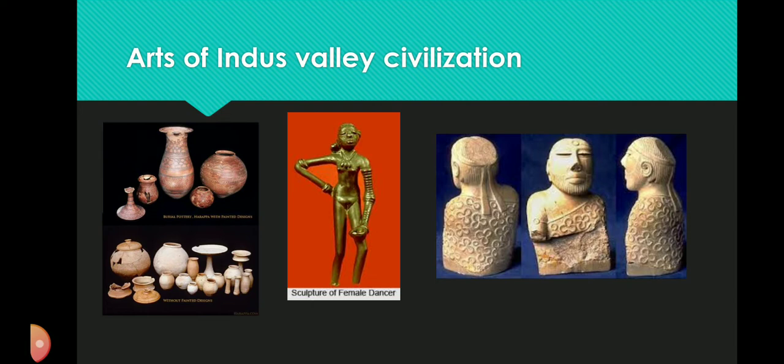The arts of the Indus Valley Civilization emerged during the second half of the 3rd millennium BCE. The forms of art from various aspects of this civilization include sculptures, seals, pottery, gold jewelry, and terracotta figures.